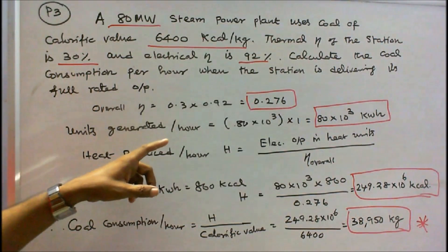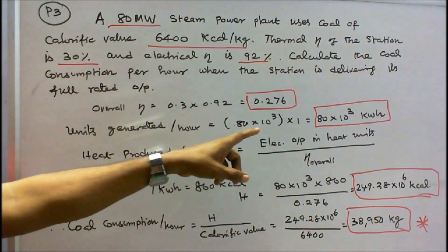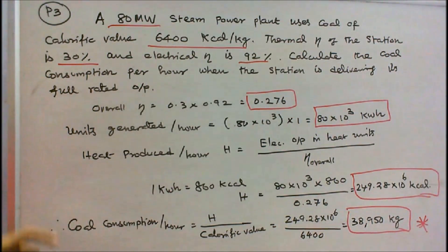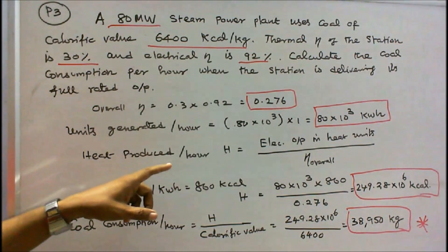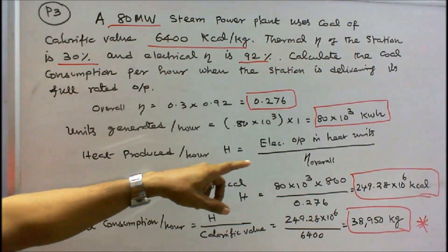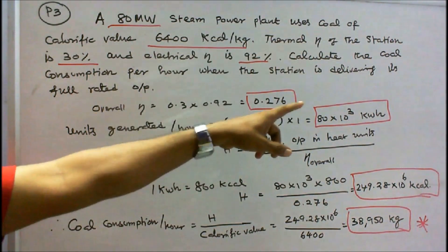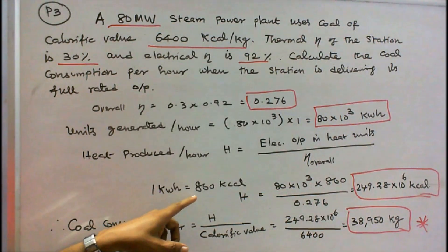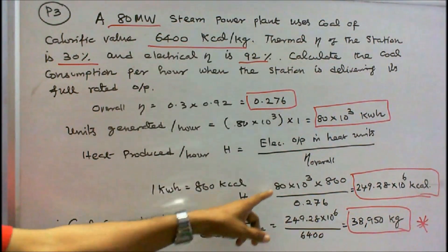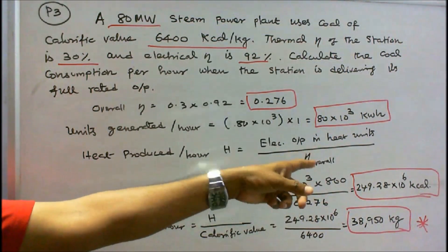Second step: units generated per hour = 80 megawatts = 80 × 10³ kilowatts × 1 hour = 80 × 10³ kilowatt-hours. Third step: heat produced per hour H = electrical output in heat units ÷ overall efficiency. Electrical output in heat units = 80 × 10³ × 860 kilocalories (since 1 kilowatt-hour = 860 kilocalories), divided by 0.276 = 249.28 × 10⁶ kilocalories.